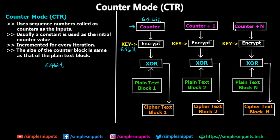We use the key to encrypt this counter value. The counter is a random constant number selected to add more randomness. We encrypt the counter using the key, then we perform an XOR operation between the encrypted counter and plaintext block 1. Your plaintext may be more than 64 bits, so you divide it into 64-bit blocks. After performing the XOR operation you get ciphertext block 1. Notice there is no feedback mechanism directly.